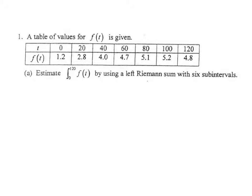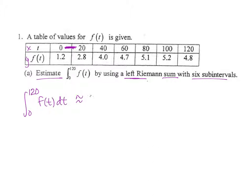For part A, we are to use our table and make a left Riemann sum with six subintervals, estimating the integral from 0 to 120 of f(t) dt. Using the left Riemann sum, we find the difference in t values as our width and f(t) as our height (length). We choose the leftmost value for each interval because this is a left Riemann sum.